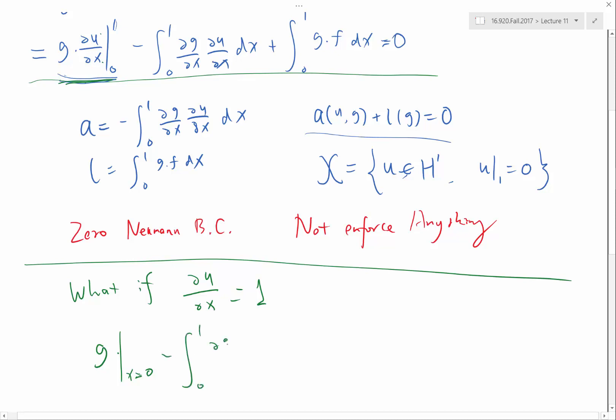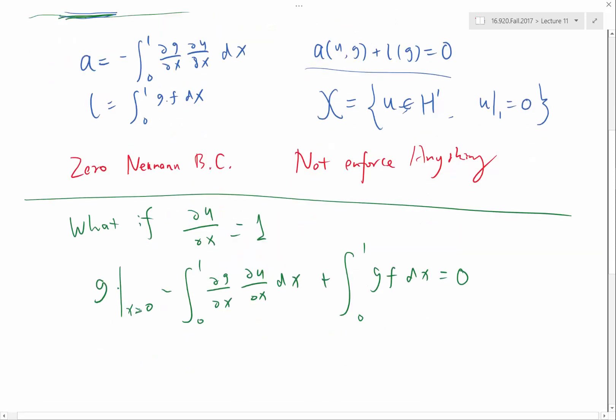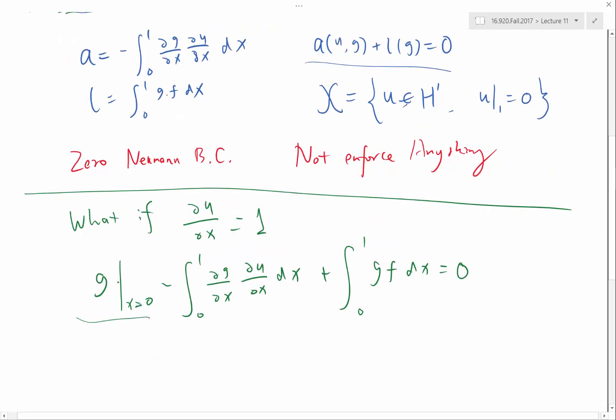And this term is the same, right? All right, so the additional term I get is g at x equal to 0.